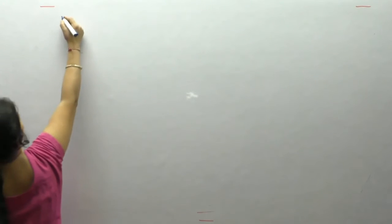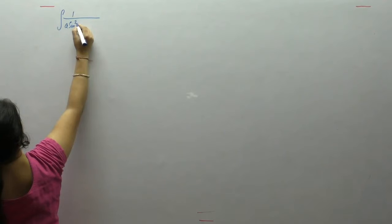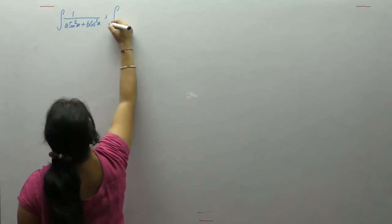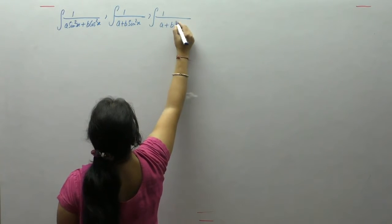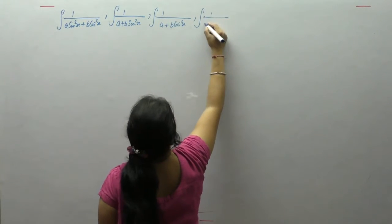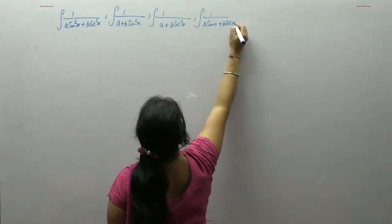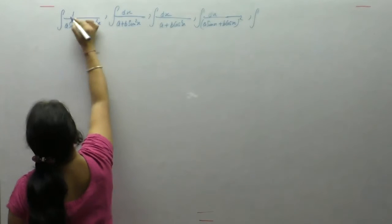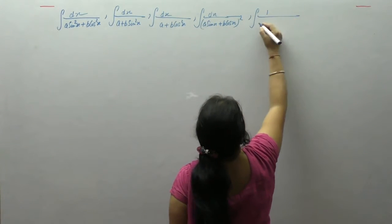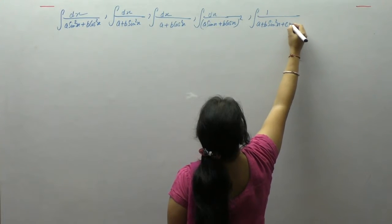Hello students, today we will start the integrals of type: 1 upon a sin²x plus b cos²x, 1 upon a plus b sin²x, 1 upon a plus b cos²x, 1 upon (a sinx plus b cosx)², and integrals of the form 1 upon a plus b sin²x plus c cos²x.